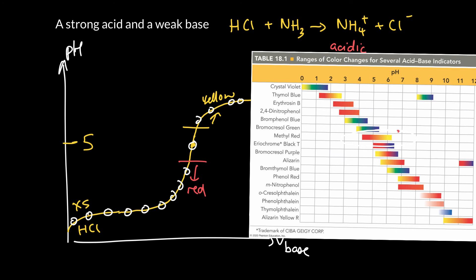Unlike my choice of a color there, white did not work so well. So methyl red is a very good indicator to use for something like HCl and NH3.